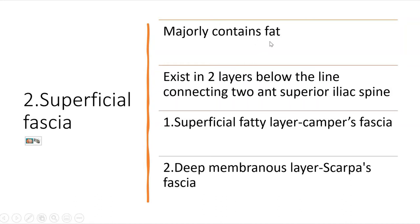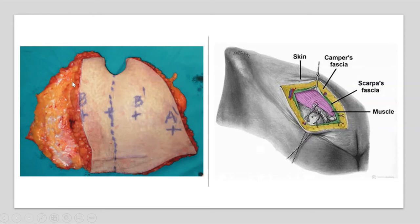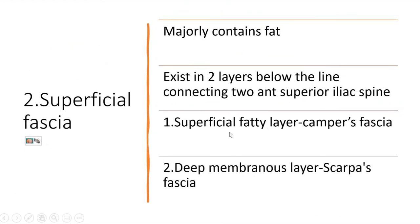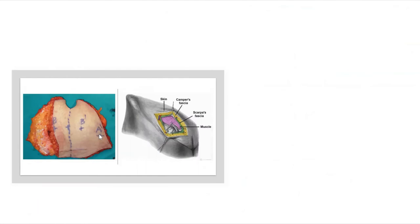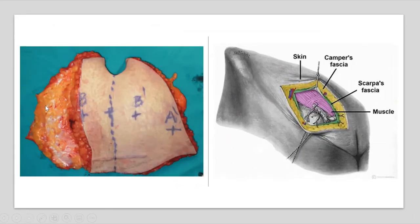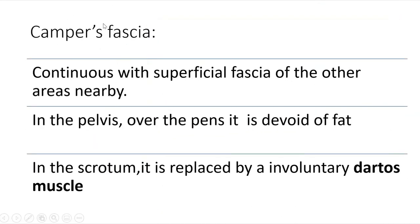Moving on to the superficial fascia, which majorly contains fat and is a major site for fat accumulation, especially in females, contributing to obesity. Below the line connecting the two anterior superior iliac spines, the superficial fascia exists in two layers: the superficial fatty layer called Camper's fascia, which mainly contains fat, and the deep membranous layer called Scarpa's fascia, which is made up of elastic fibrous tissue.